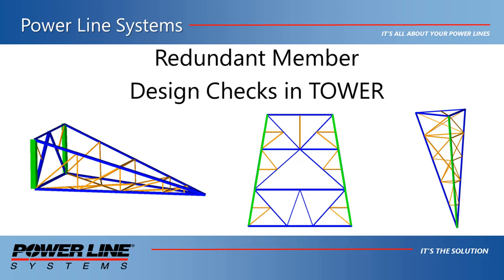In a lattice tower, redundants are members which theoretically do not carry load, but are used to brace load-carrying members to increase their compression capacity. In reality, redundants do carry some loads, but they are typically very small.